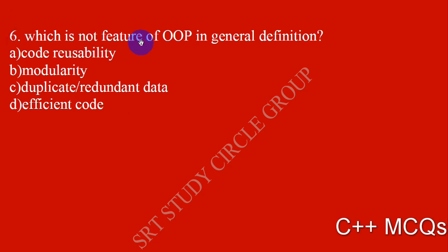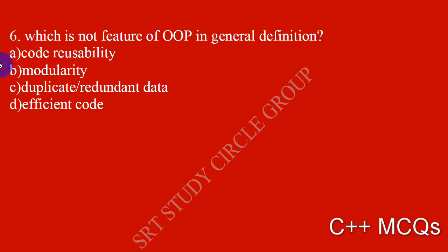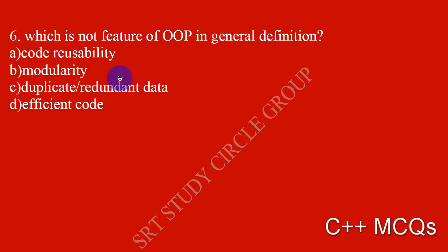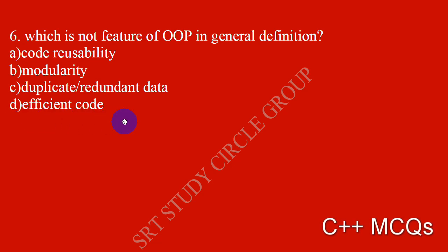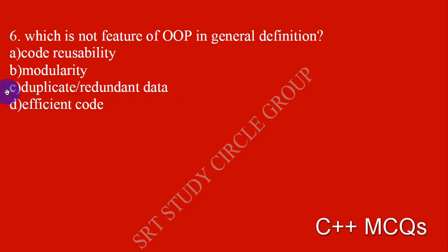Which is NOT a feature of OOP in its general definition? The options are code usability, modularity, efficient code, and duplicate redundant data. The answer is duplicate redundant data.